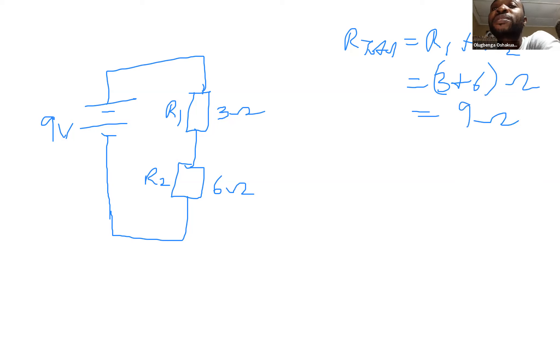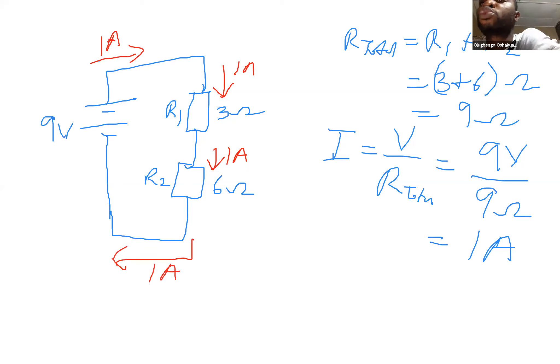So when asked, what is the current equal to V over R? And that is the 9 volts divided by 9 ohms will give us 1 ampere. So 1 ampere will flow back out of the 6 ohms resistor.